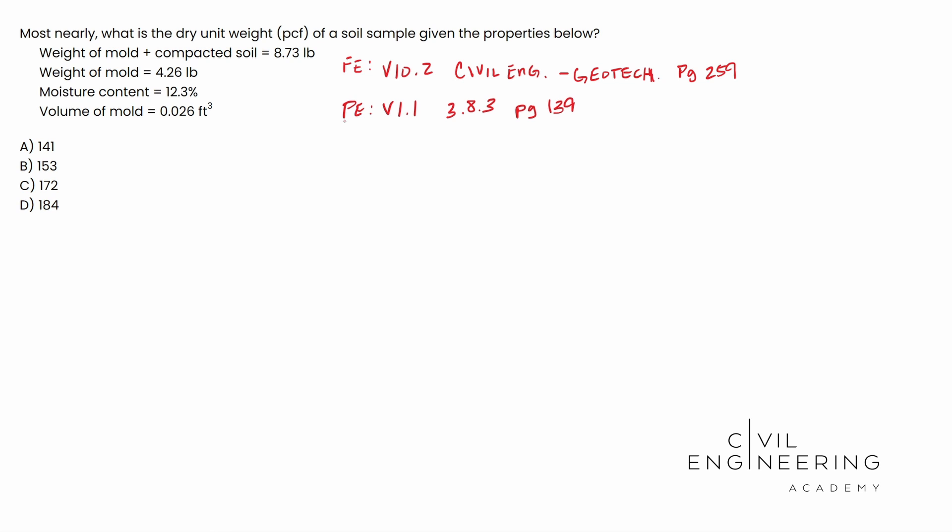When you're looking on those pages, you're going to find that the dry unit weight, gamma_d, is actually the weight of the solids over the volume. The volume of your sample.